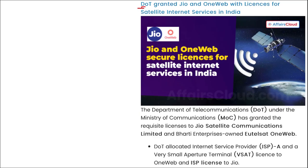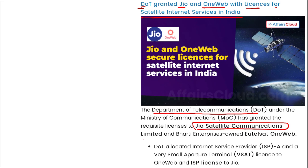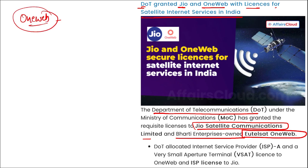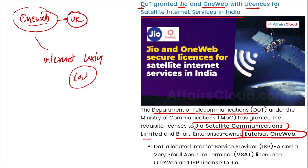DOT — the Department of Telecommunications — has granted Jio and OneWeb licenses for satellite internet services in India. The Department of Telecommunications under the Ministry of Communication granted request licenses to Jio Satellite Communication Limited and Bharti Enterprise-owned OneWeb. OneWeb is a company of the United Kingdom. Both Jio Satellite and OneWeb are building constellations around the Earth to provide internet using satellite technology, similar to Starlink.